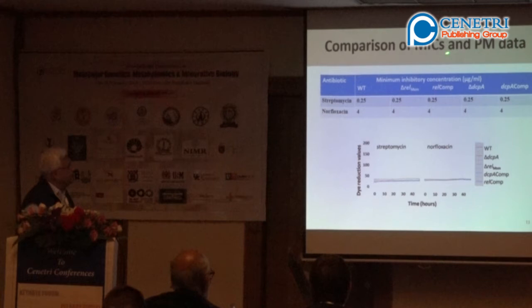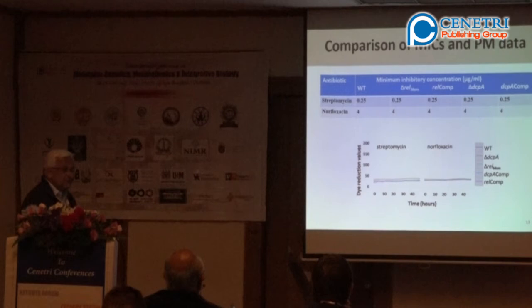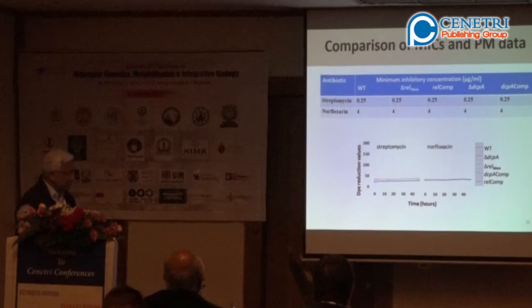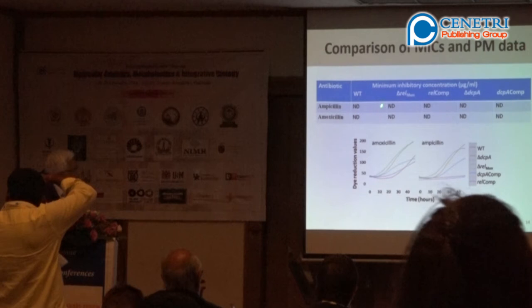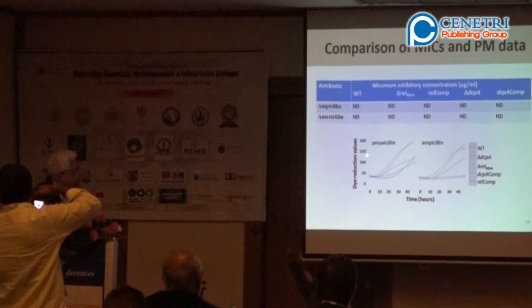When we look at this in minimum inhibitory concentration and PM analysis — streptomycin, norfloxacin — we calculated the delta-REL, delta, and complemented delta-REL strain. You must check that removing the gene does not have a polar effect. To circumvent this, you put the gene back — knock in — and if the effect is rescued, that means you are working in the right direction. Similarly, cyclic-di-GMP was knocked out, complemented, and we looked at antibiotic response: streptomycin, norfloxacin, ampicillin, amoxicillin — many of them showed no detectable resistance level.